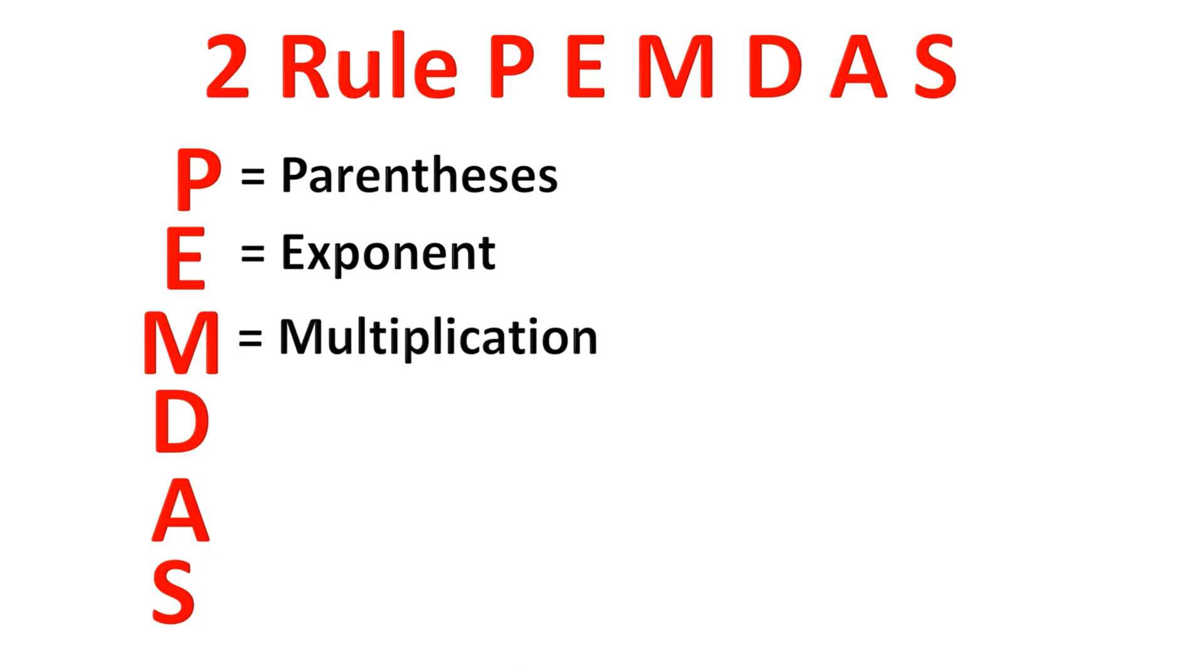P stands for parentheses, E for exponents. M and D mean multiplication and division, which have equal priority and must be done from left to right.